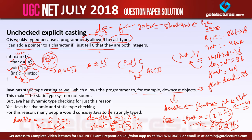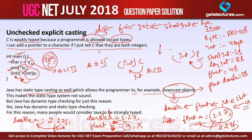This is called downcasting when you go from a bigger variable to a smaller one — for example, storing a double into a float. You can also upcast by storing a smaller variable into a bigger variable. This makes the static type system not entirely sound, and Java has dynamic type checking for this reason. So Java has both dynamic type checking and static type checking.